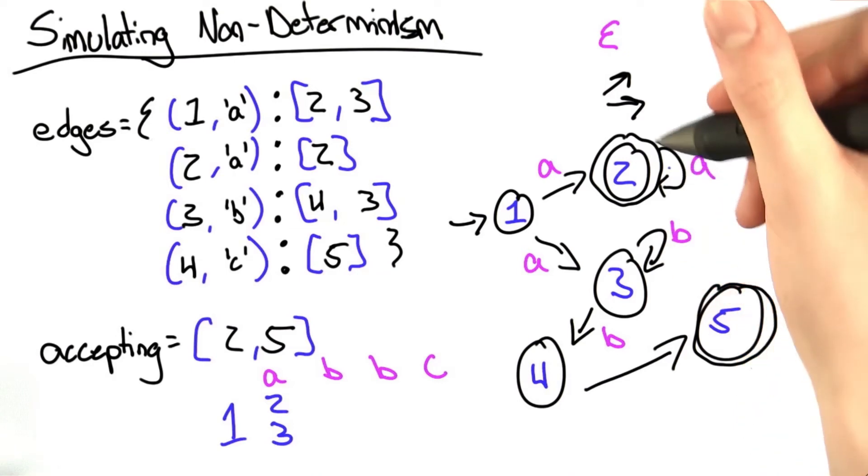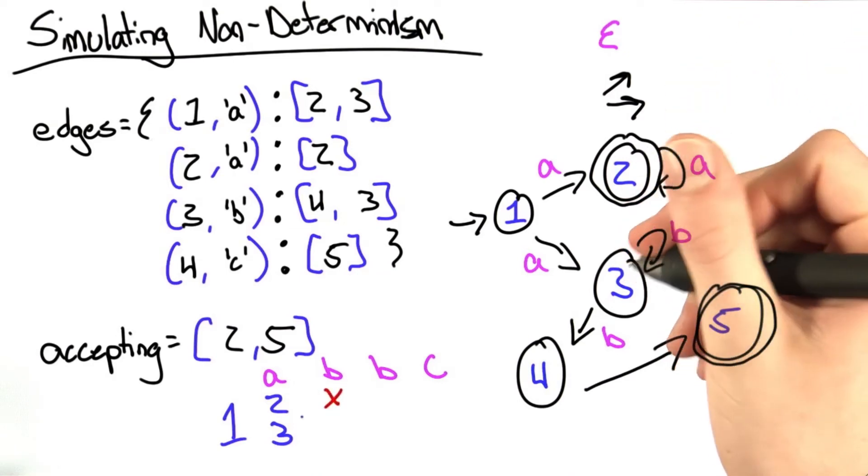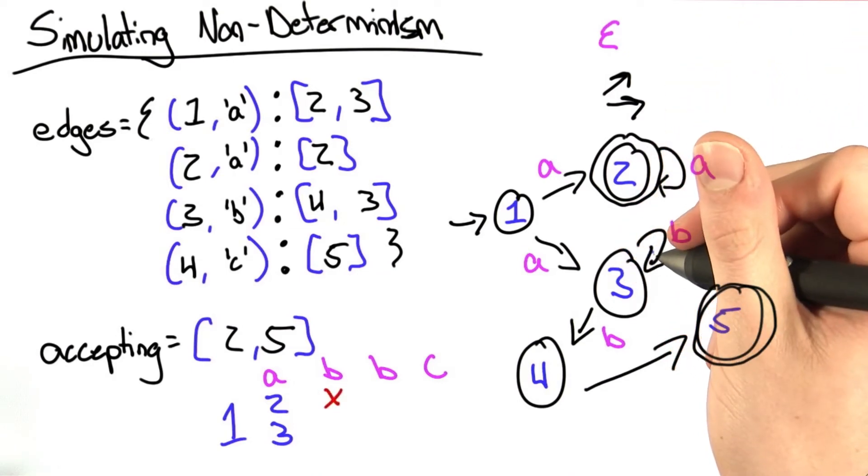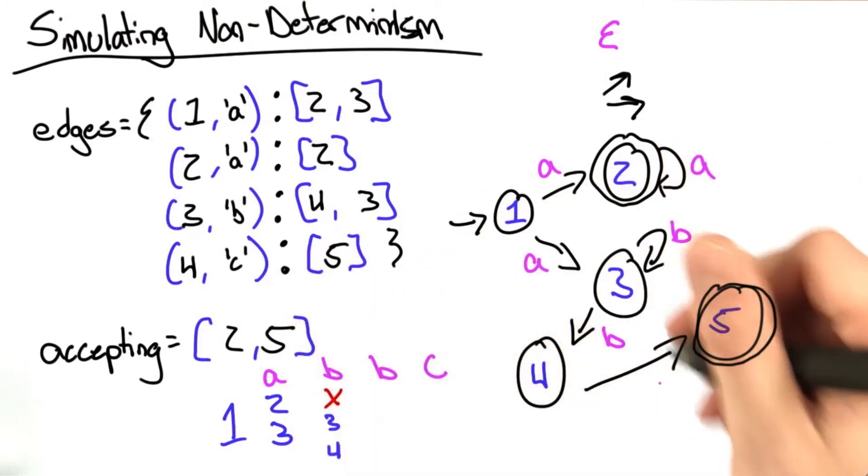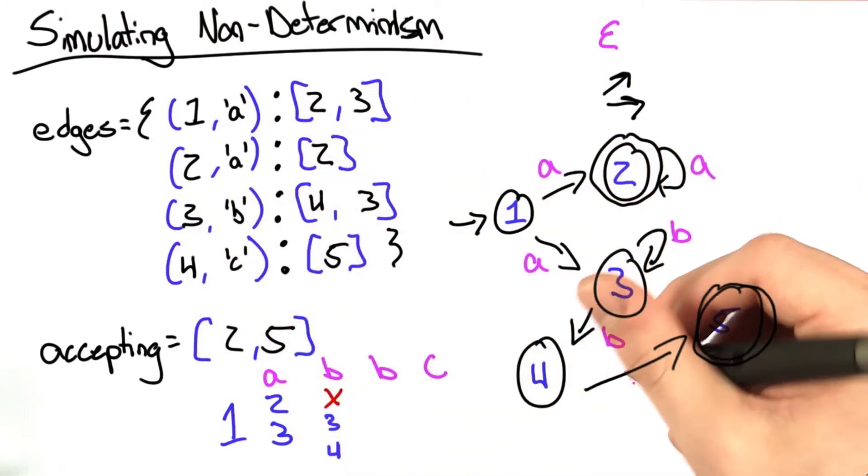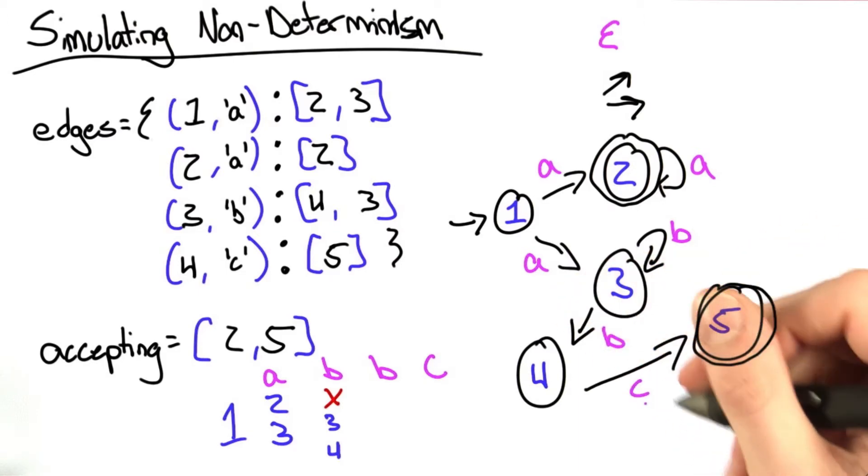Then we have the letter B. From state 2, there's nothing we can do. From state 3, we have two outgoing edges with B. So we're now at 3 and 4. Oh, and I forgot to include this last state transition, C, which will come up in a bit.